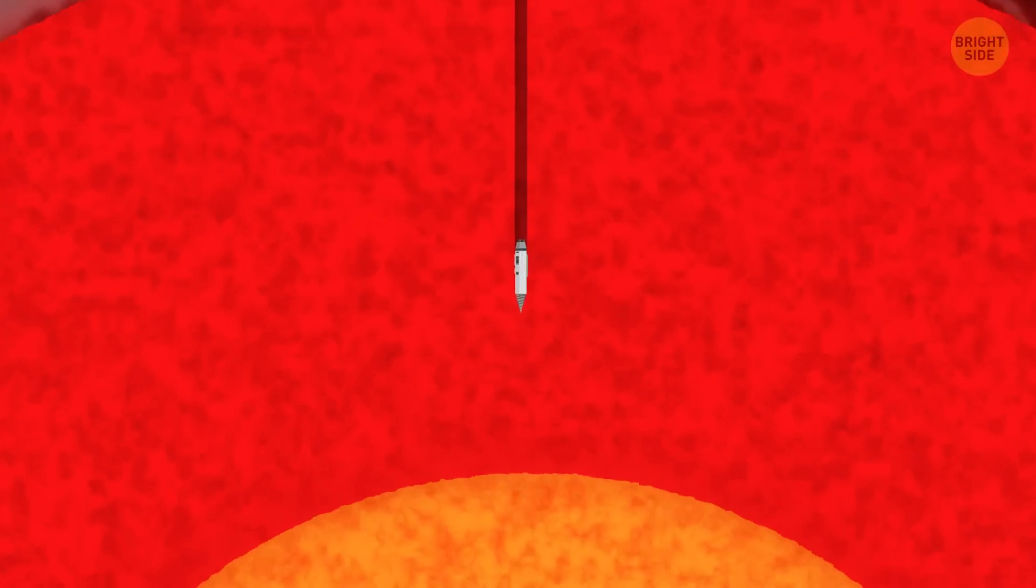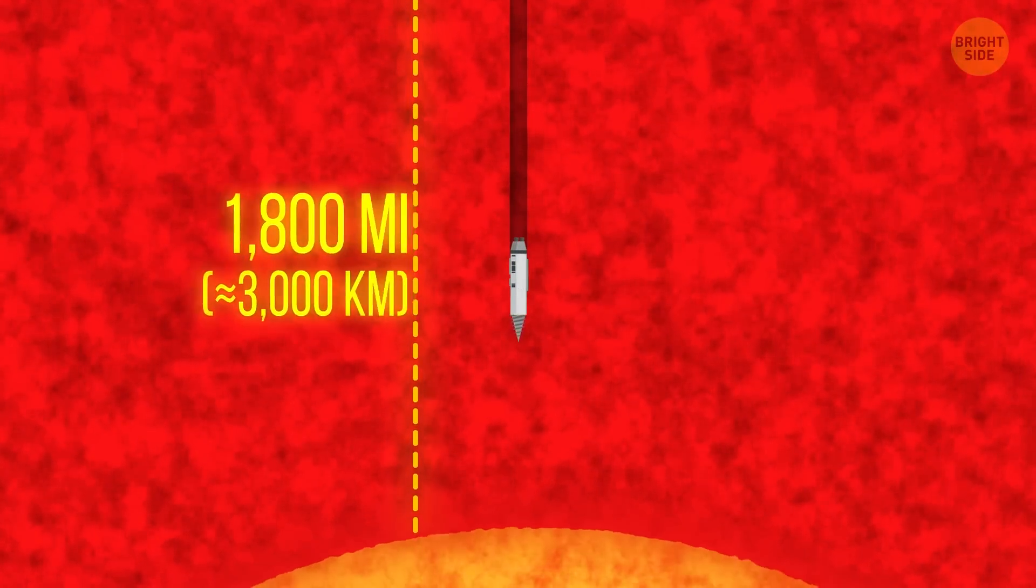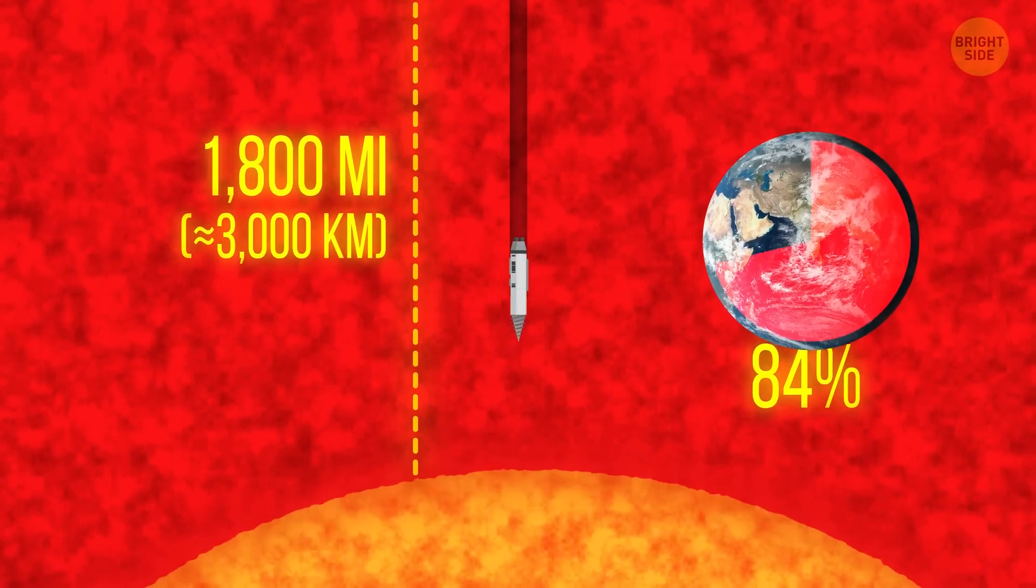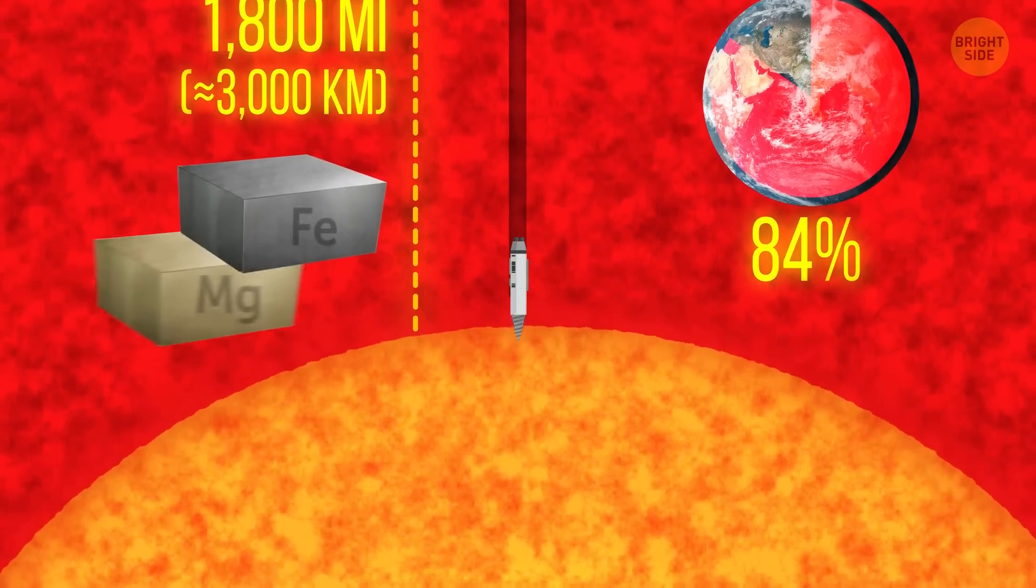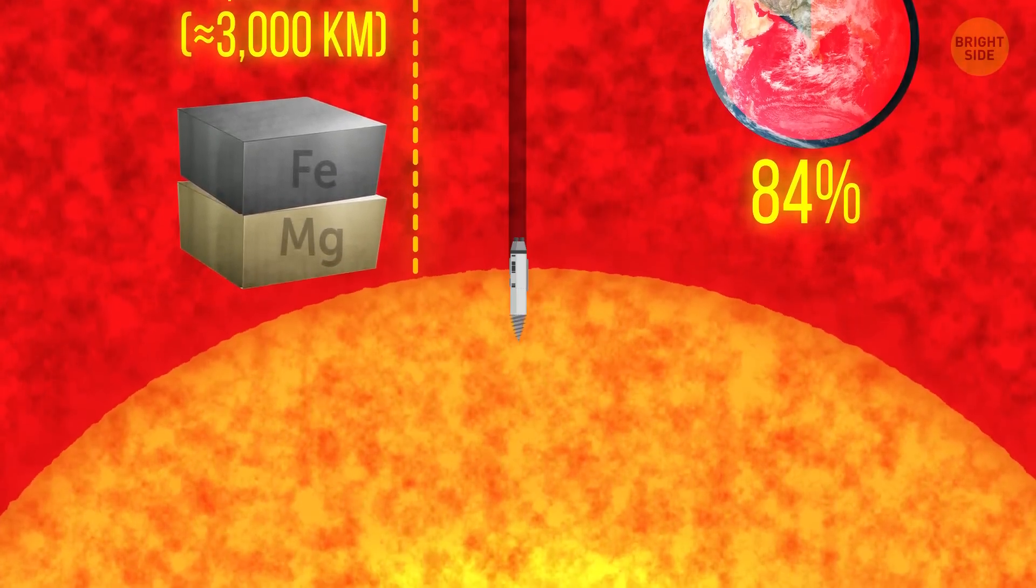You reach the mantle. This layer is about 1,800 miles thick and makes nearly 84% of the planet's volume. It consists of silicate rocks rich in iron and magnesium. Well, you don't need to drill anymore.